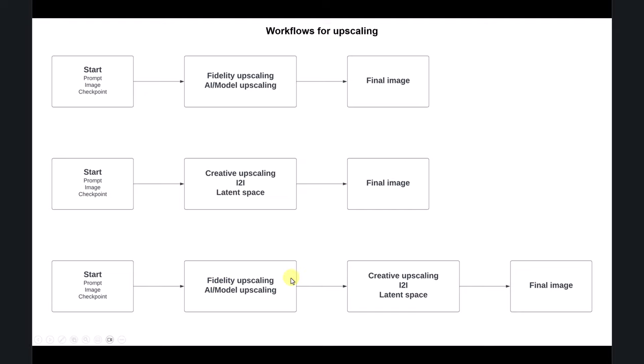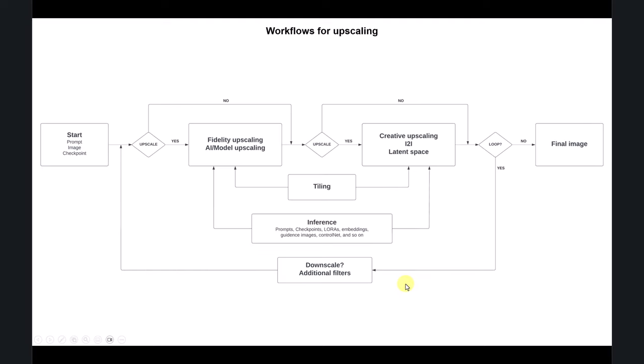This two-step workflow is what's called the high res fix — you start with an image, do the fidelity scale, then move to creative latent space upscaling. This can get very complex, and spaghetti-style workflows like this are easily implemented in ComfyUI with many links. In Forge or Automatic1111, you're more restricted but you can iterate manually, which is perfectly fine for most use cases.